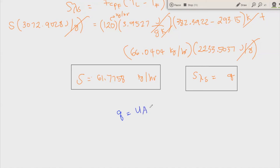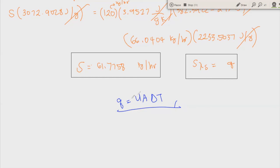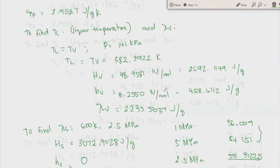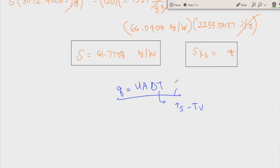For the design equation, Q equals U times A times delta T, where U is the overall heat transfer coefficient, A is the surface heating area, and delta T is typically the difference between the steam temperature and the vapor temperature. If you are given U, A, and delta T, you can find Q directly, and then find S from the steam conditions.